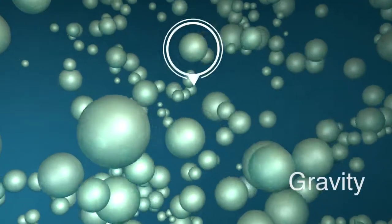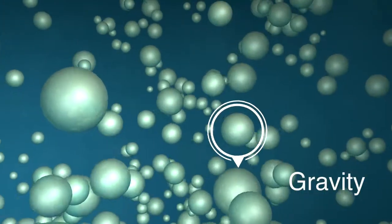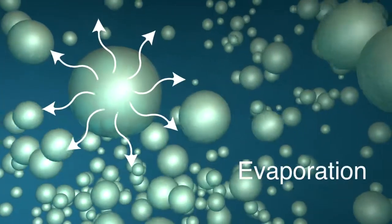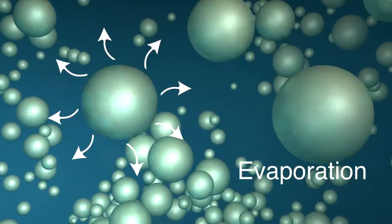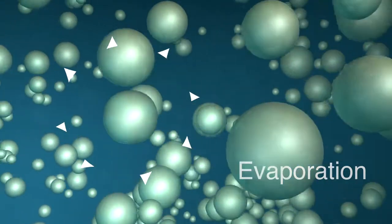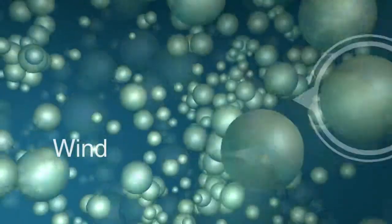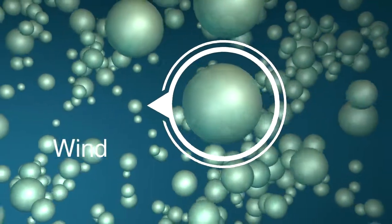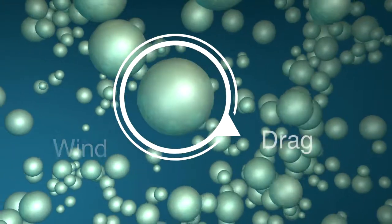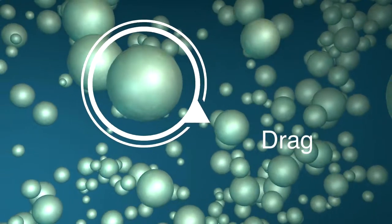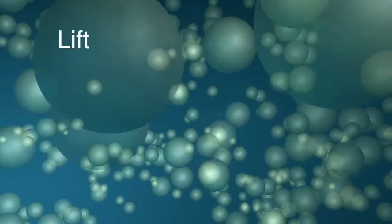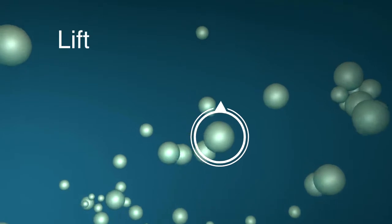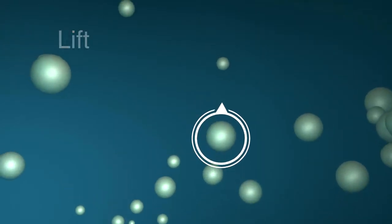Gravity pulls the droplet down out of the air. Evaporation makes droplets smaller. Wind will move droplets. Drag will slow droplets. Lift, which is rising air, carries small droplets upward.